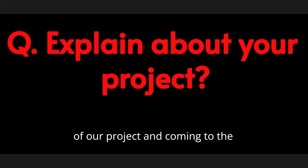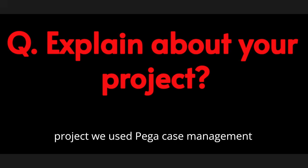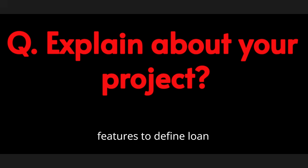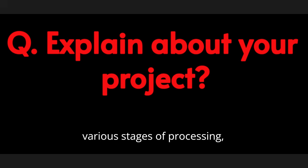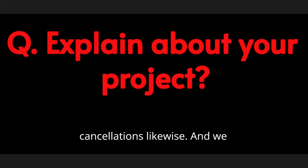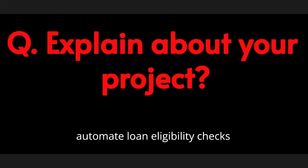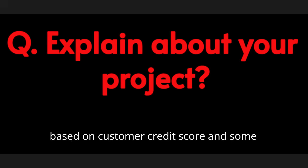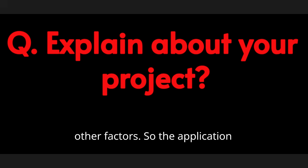Coming to the technical aspects, in our project we used Pega case management features to define loan automation life cycles, including various stages of processing, approvals, rejections, and cancellations. We also leveraged Pega decision rules to automate loan eligibility checks based on customer credit scores and other factors.